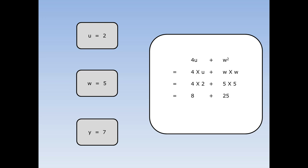4 times 2 is 8, 5 times 5 is 25. 8 plus 25 is 33. 4u plus w squared equals 33.